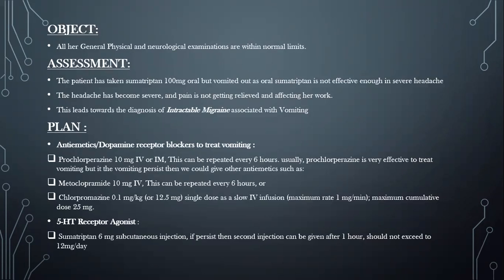To treat the headache, we give a 5-HT receptor agonist — sumatriptan — but we will give it subcutaneously at 6 mg, since oral is not working and she vomited it out when she took it. If the headache persists, a second injection can be given after one hour, but the dose should not exceed 12 mg per day.